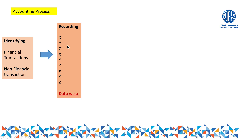The accounts recorded can be anything — for example: commission, salary of employees, food expenses, account of Ahmad, account of Mahmoud, bank account, tax to the ministry of finance, penalties, and so on. We simplify by calling them X, Y, Z. So record all transactions in the book of account in this way.